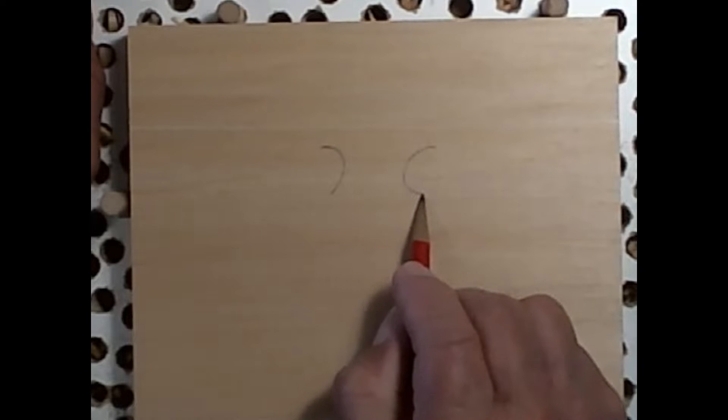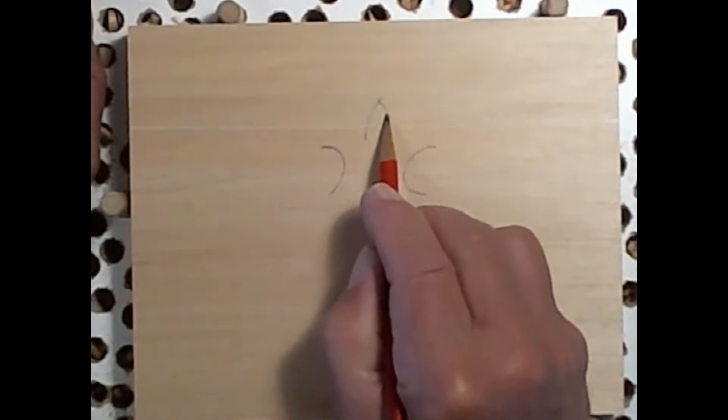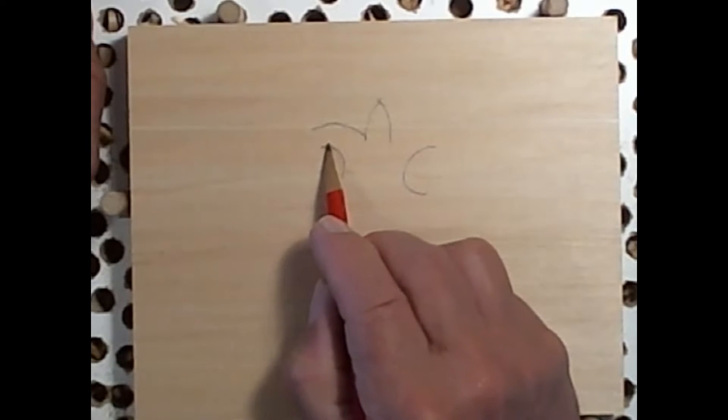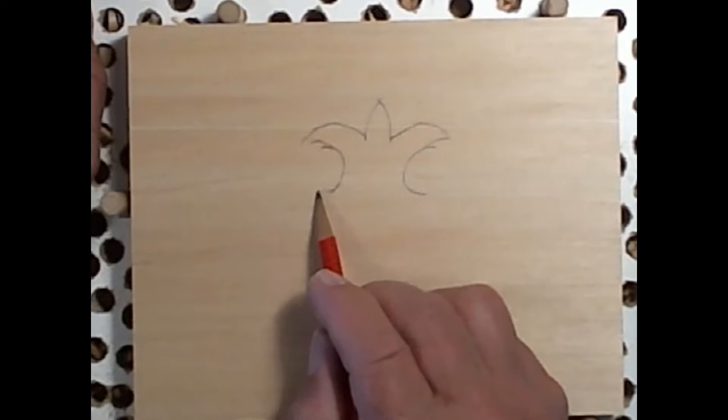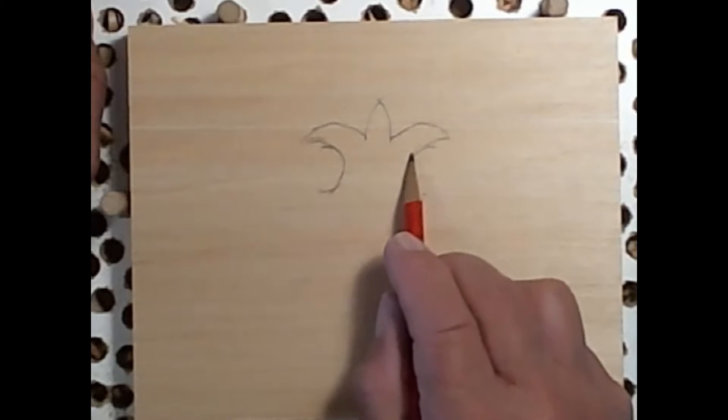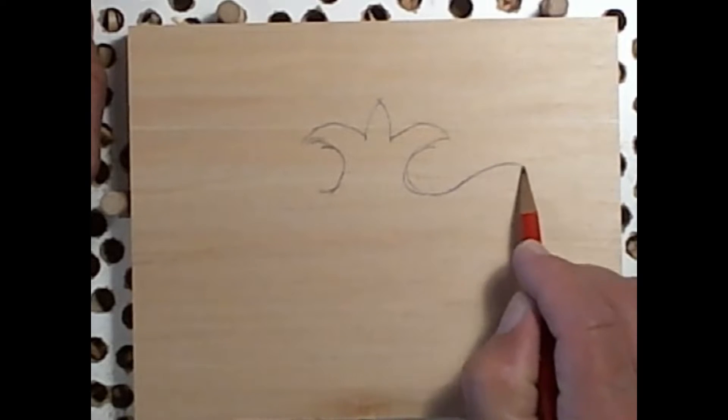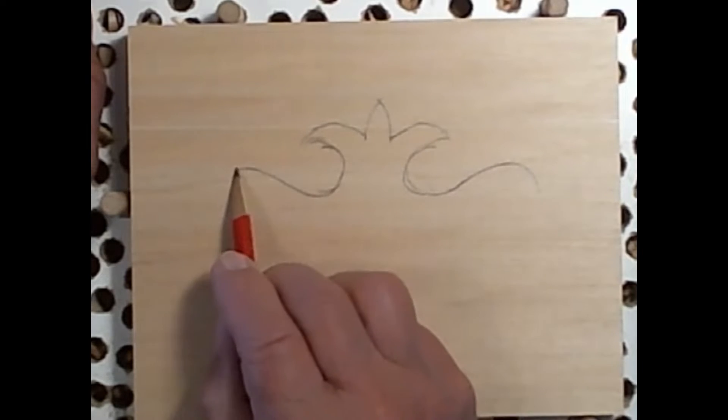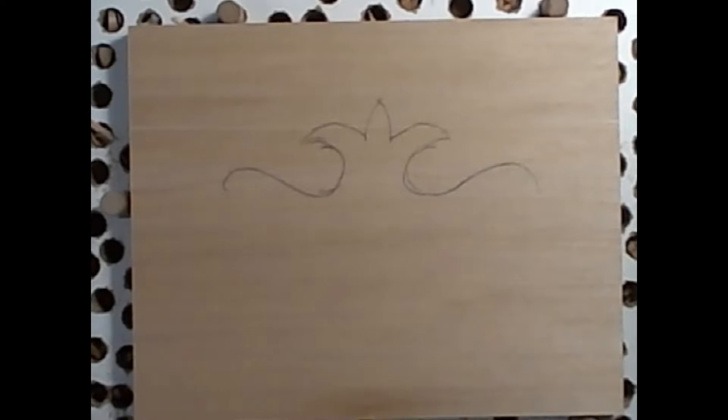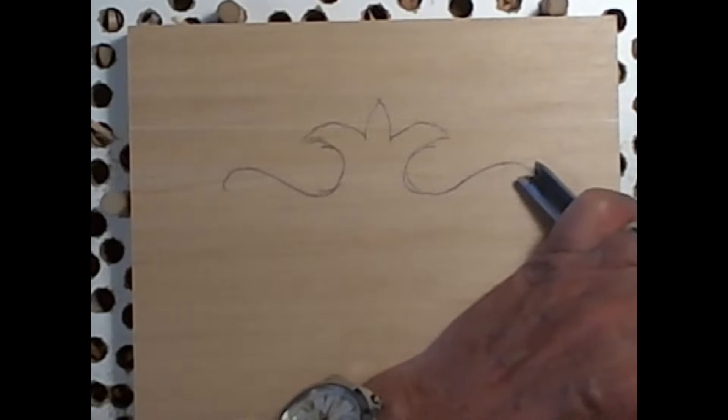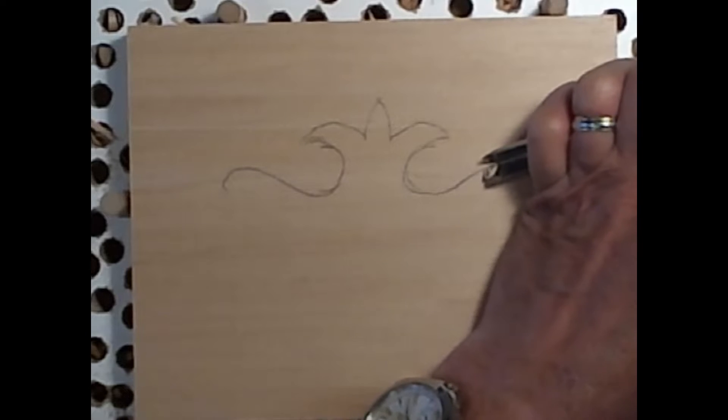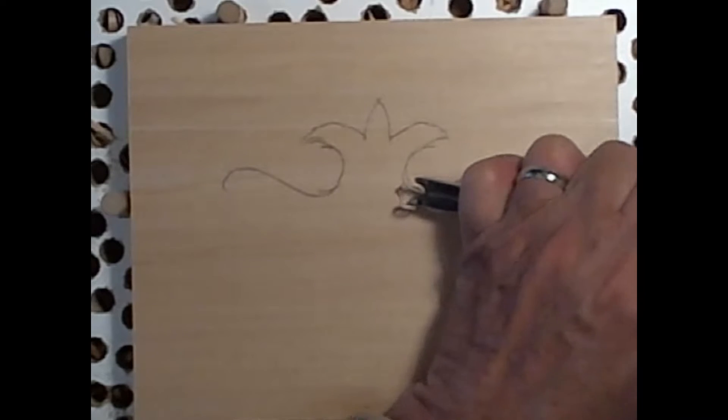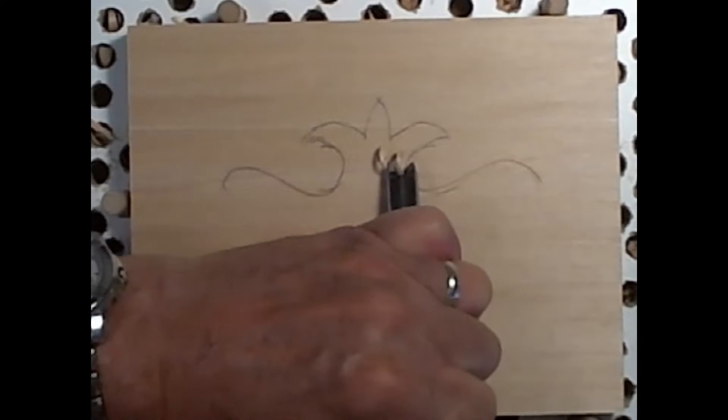So if we just start off with a design. So I'm just drawing something freehand here. And let's say you wanted to add this to a cabinet or your piece of furniture as part of your molding. Then it's just a matter of running the v-tool right on the center of that design.